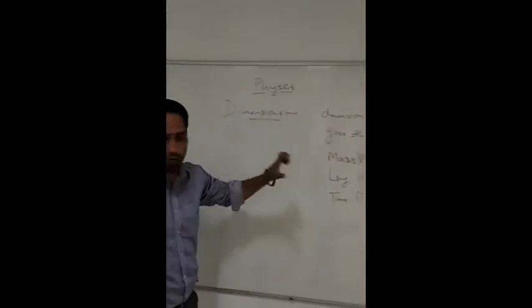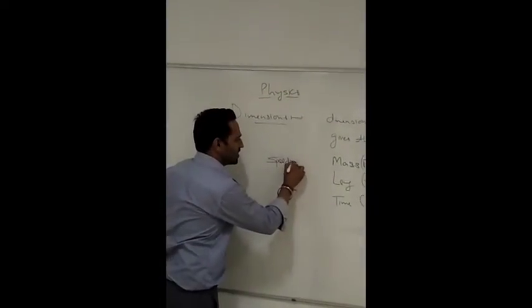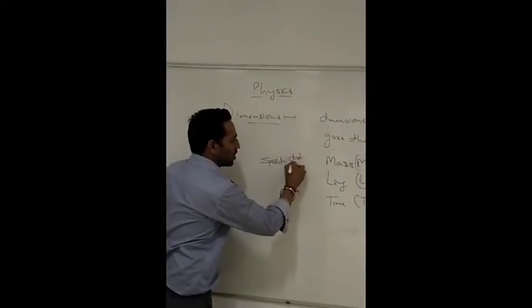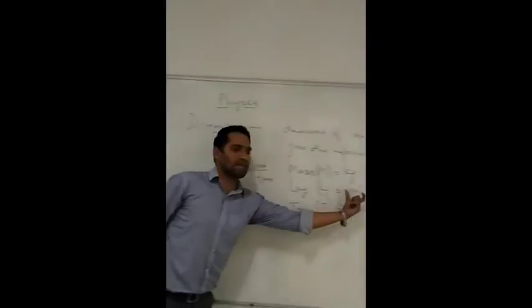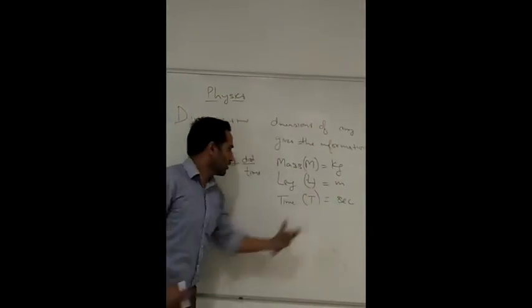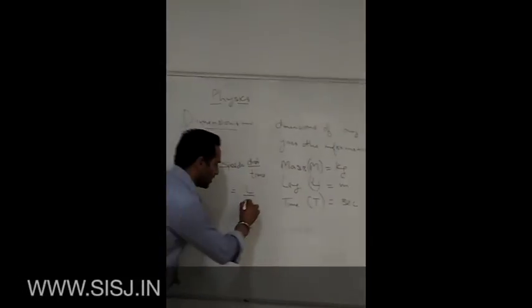Now, if I am framing a physical quantity by using these terms, then we can have a physical quantity. Speed is equal to distance upon time. If you recall, distance is measured in length only, so it comes out to be L, and for time it will be T.